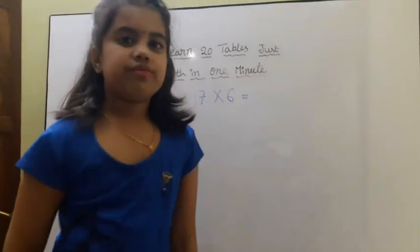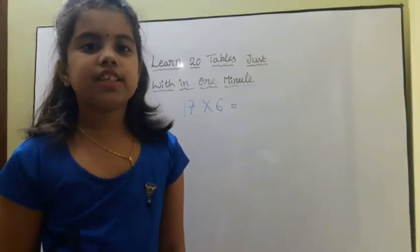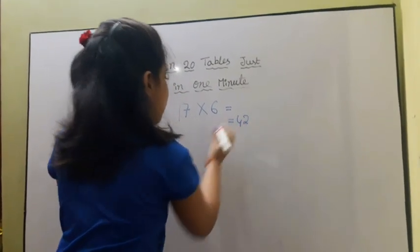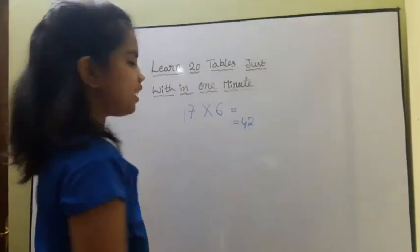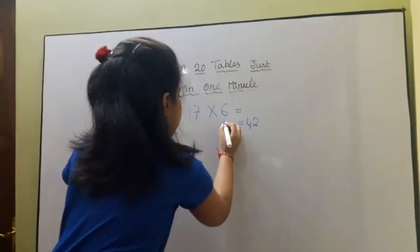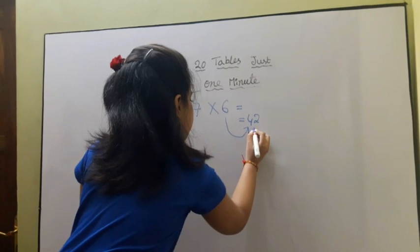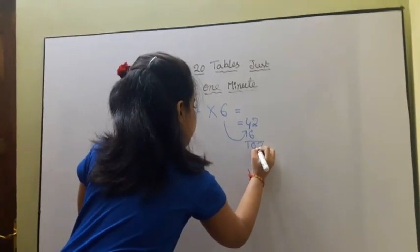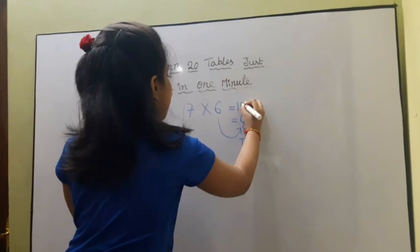First we multiply 7 into 6. Then we add 6 into 10's place. Now answer is 102.